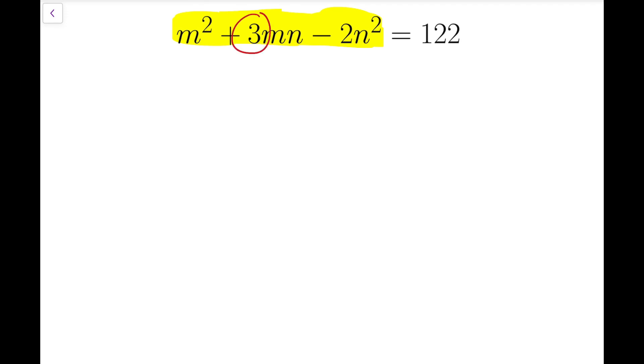Since the coefficient of the middle term is not even, I need to multiply both sides by 4, so that when I complete the squares, all terms have integral coefficients. So it goes like this: 4m squared plus 12mn minus 8n squared equals 488.